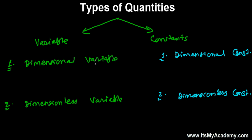If we look at dimensional variables — those physical quantities which are variable as well as possess dimension — a very simple example is area. The area can be anything: 25 square meters, 29 square meters, 255 square kilometers, 35 acres — the value is variable. But if you look at the dimension of area, we know that's L squared, two dimensions in length. Similarly, volume also has dimension.